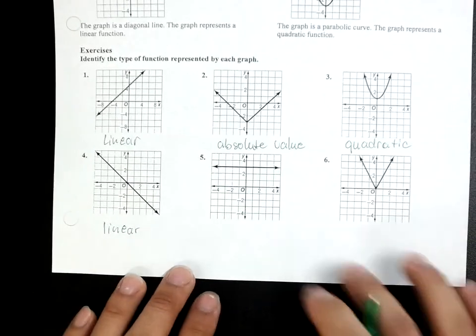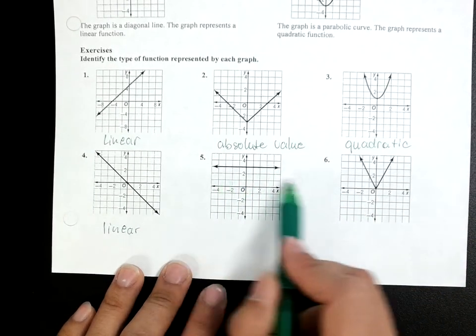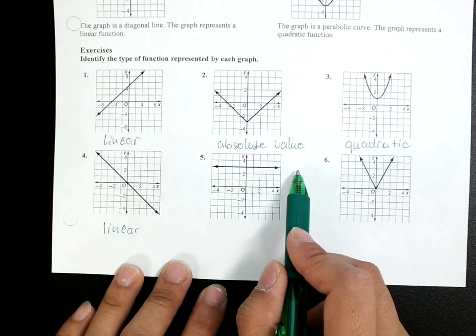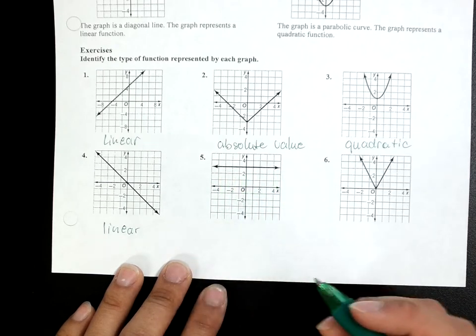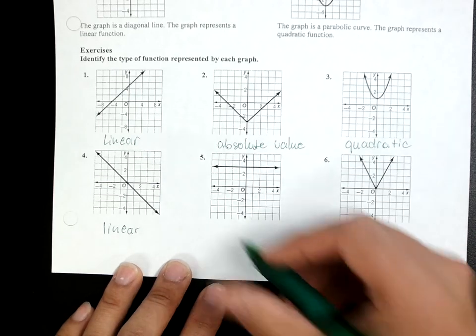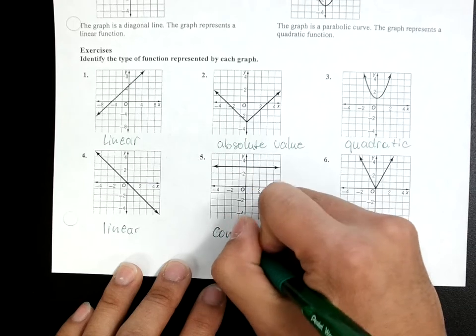Now, 5, 5 is also a straight line, but there's no slope. You notice, it goes across the Y at one point. That's our constant, a straight horizontal line. That's our constant function.